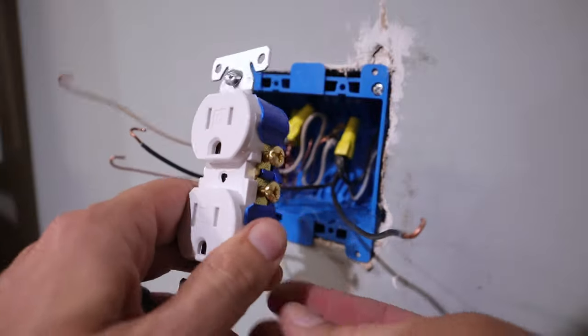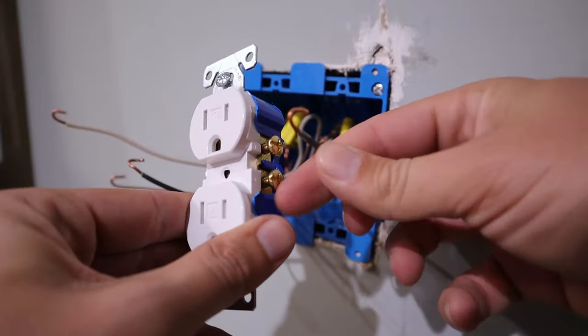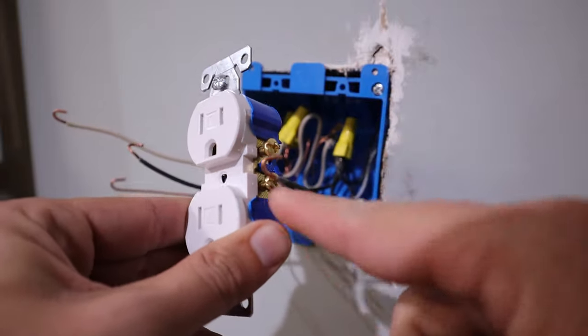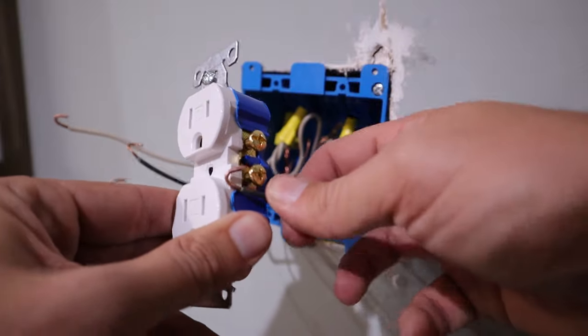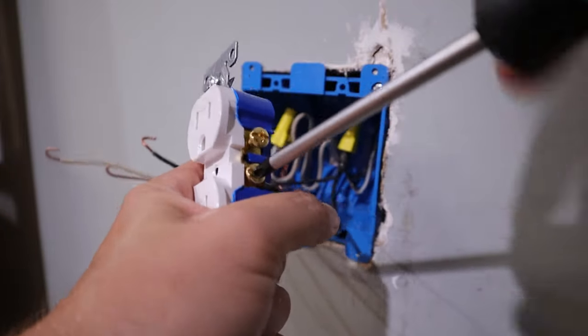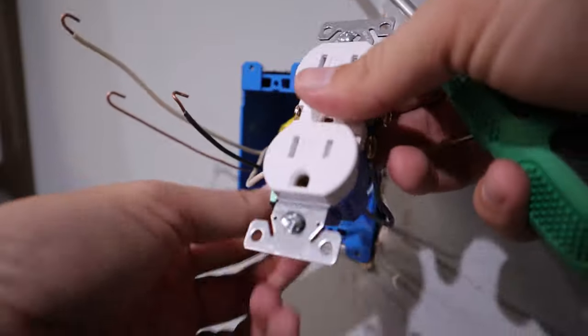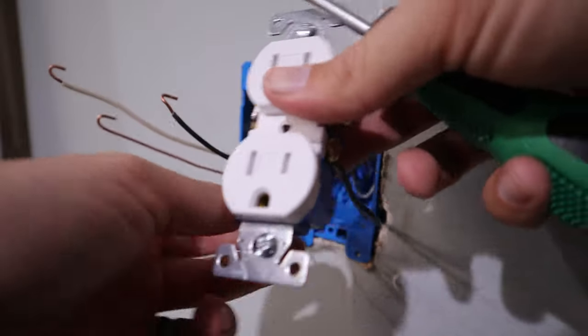All right. So now the last wire that I've got left is the black wire for this outlet. And this is going to go over here on the right side on these brass terminals. So then just tighten this down nice and tight as well. Give all of them a little tug just to make sure that they're not going to come off.